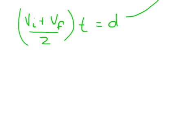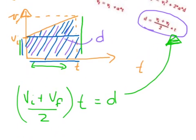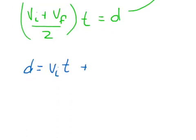We've got the area of the square, so the distance is the area of the square Vi times T, plus the area of that triangle bit. Let's just go and have a close look at the triangle bit. The area of the triangle is half the base times the height. So half of the base is half of time. Write that in there. Half of the base.